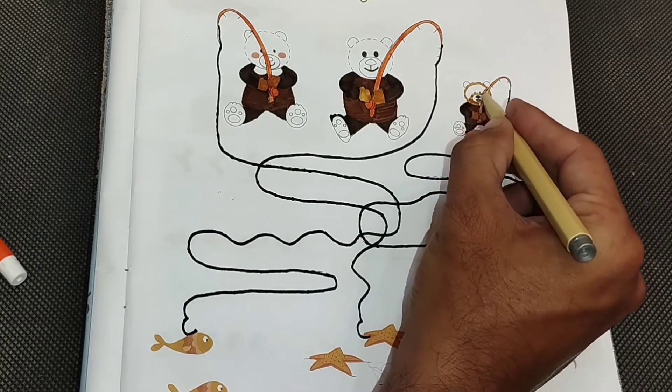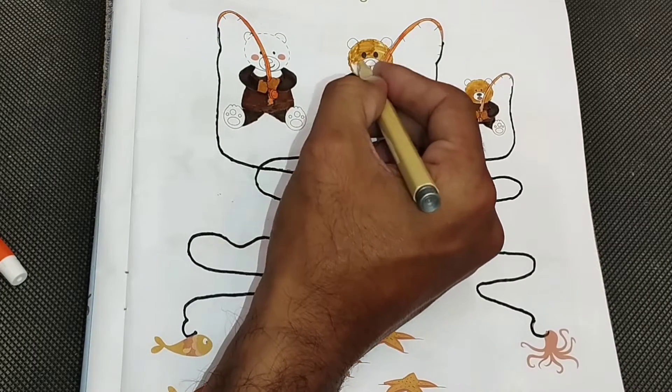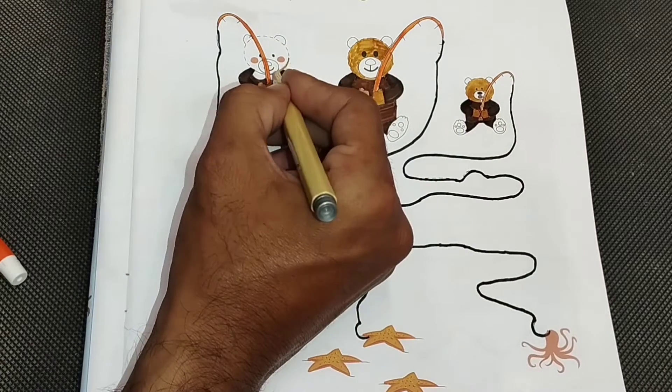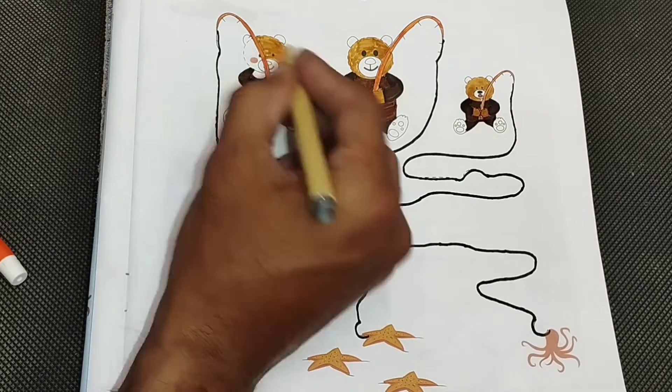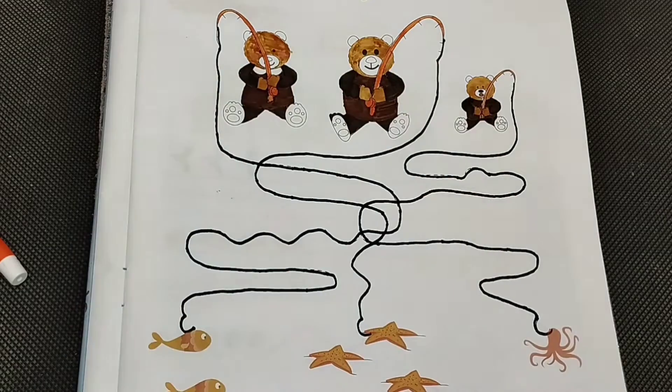Q is for Question, Q-Q-Question. R is for Ring, R-R-R-Ring. S is for Sun, S-S-Sun. T is for Train, T-T-Train.